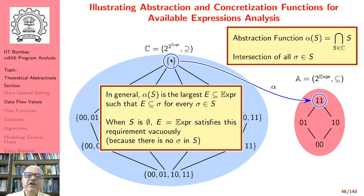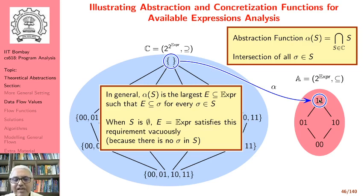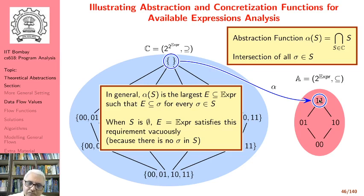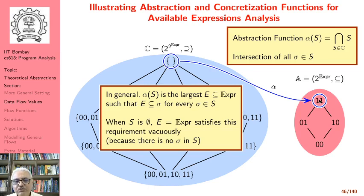The abstraction function of having seen nothing is to assume that all expressions are available. This coincides with our choice of top values. When computing available expressions at the start of a loop before values at the bottom of the loop have been computed, the set of states there is empty. Therefore it is perfectly fine to assume the abstract value there is the top value — a more formal explanation of why we initialize with top in data flow analysis.